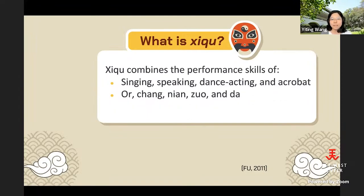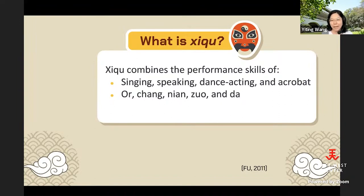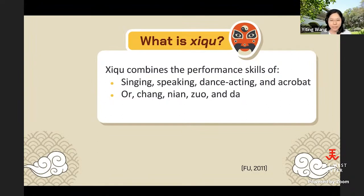Xiqu combines four different performative skills: singing, speaking, dance-acting, and acrobatics. In Mandarin Chinese, they are cheng (singing), nian (speaking or recital), zuo (dance-acting), and da (acrobatics). This is particularly why calling it Chinese opera doesn't necessarily convey the four performative skills, because opera emphasizes singing while Xiqu equally emphasizes all four: cheng, nian, zuo, and da.